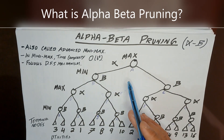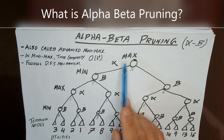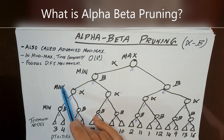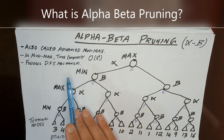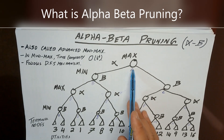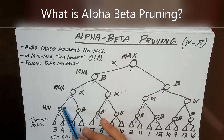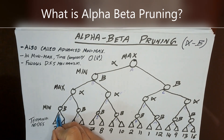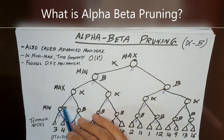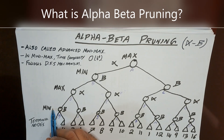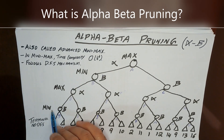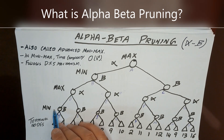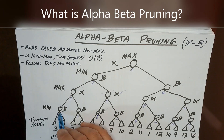Players take turns: first Max, then Min, then Max, then Min. The last level before terminal nodes is Min's turn. Since alpha-beta pruning uses depth-first search, we move toward the leftmost node first. In this case that is node H. We explore node H first — here Min is playing. Min wants to minimize the reward of Max, so at node H Min will choose between two different utility values.